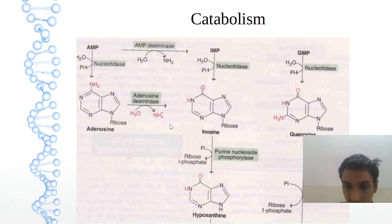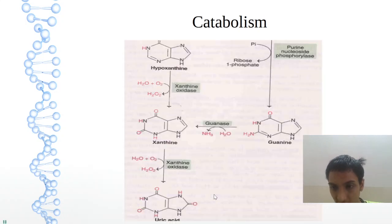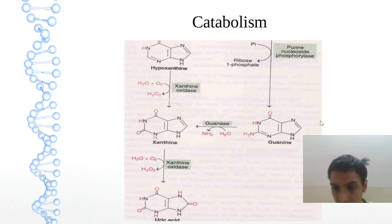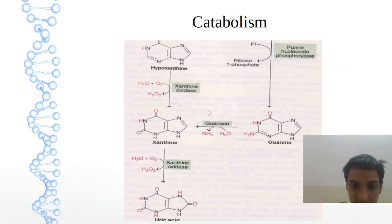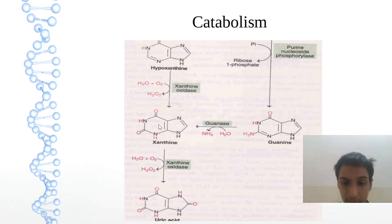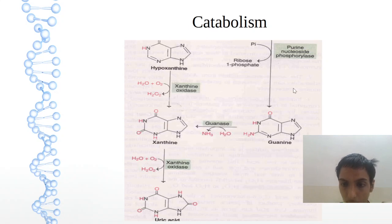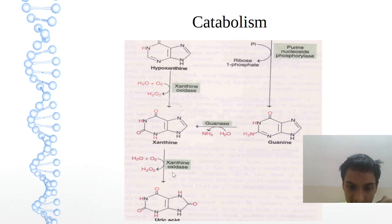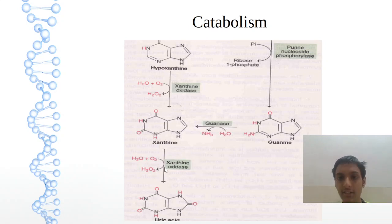So for inosine and guanosine, we add the phosphate group — hypoxanthine in the case of inosine, and guanine in the case of guanosine. Then hypoxanthine to xanthine by xanthine oxidase, with water going to hydrogen peroxide. Then xanthine is also obtained from guanine by guanase. Then xanthine on the same enzyme, xanthine oxidase, will give uric acid. This is the catabolism.